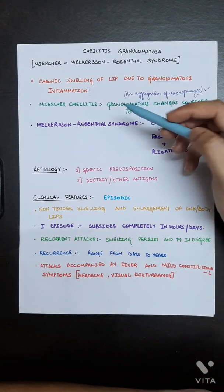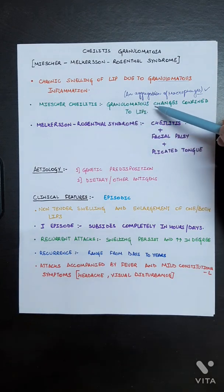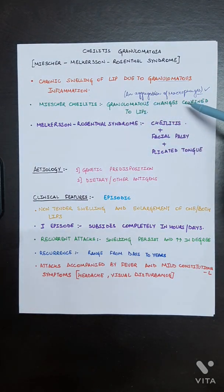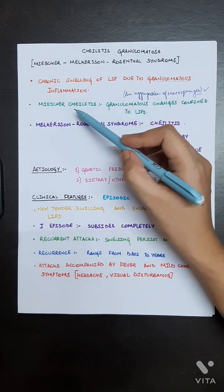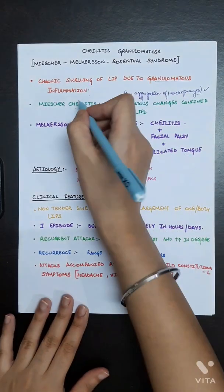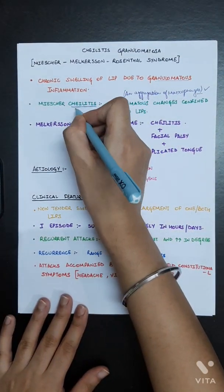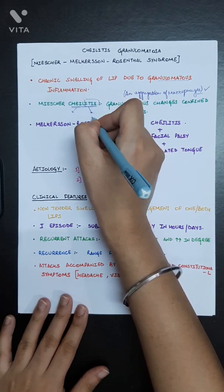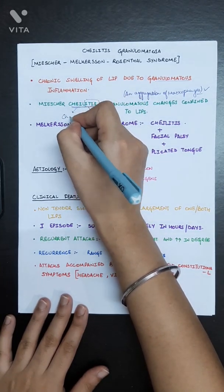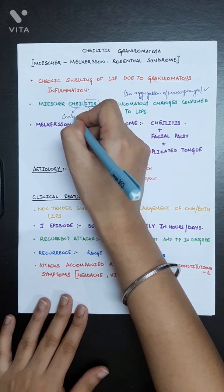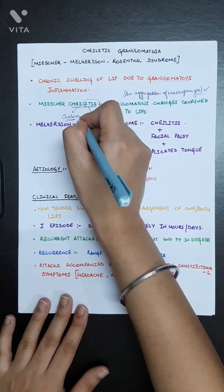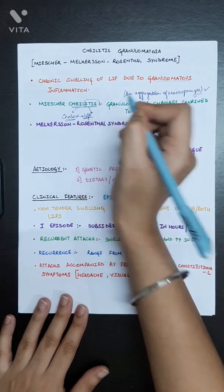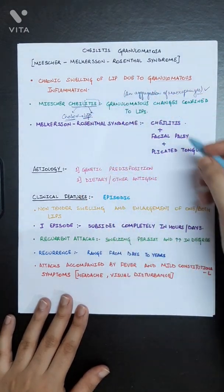Micheli cheilitis is basically granulomatous changes which are confined to lips only. In cheilitis there are two terms - itis stands for inflammation and the prefix cheilo stands for lips. So it means inflammation of lips.